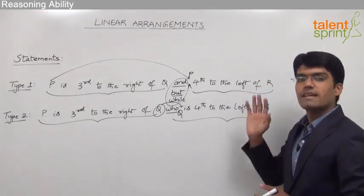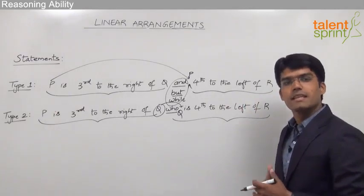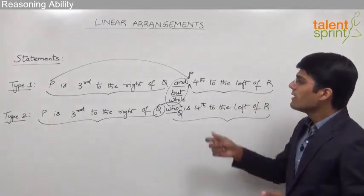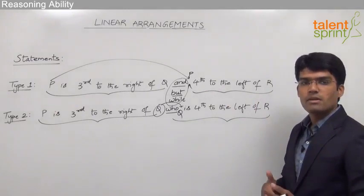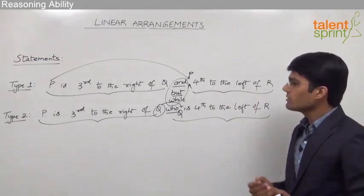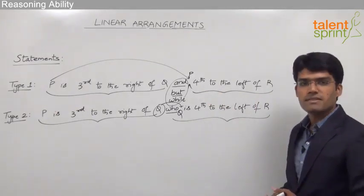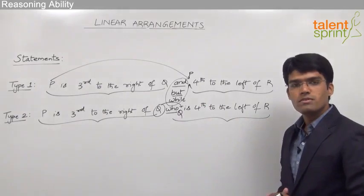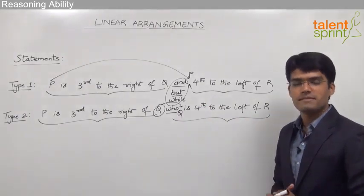So these are the two types of statements in case of linear arrangements. When the conjunctions 'and,' 'but,' or 'while' are used, you take the first person as a reference; when the word 'who' is used, you take the second person as a reference.